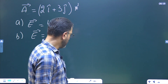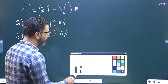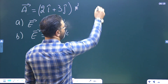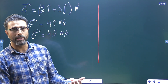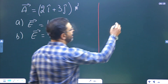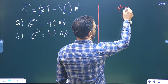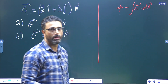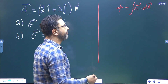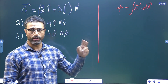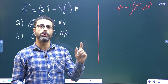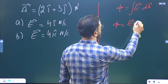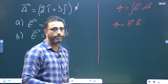We must be aware of the equation for flux. Flux is the number of field lines crossing through some area normally. The most general equation is the integration of E dot dA, where dA is the area element. If the field is uniform and the surface is plain, then flux equals E dot A — the dot product of E and A.